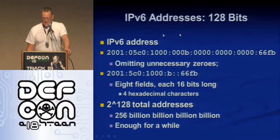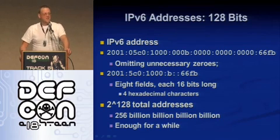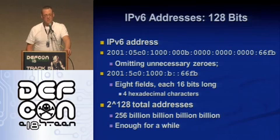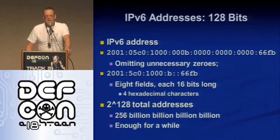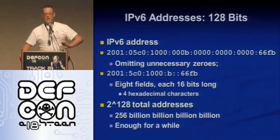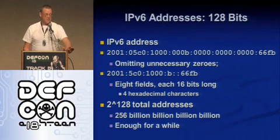IP version 6 is the answer — make the addresses really long and disgusting like this in hexadecimal. That is an IP version 6 address. Learn to love it. That is 128 bits long, and the good thing is there are enough of them — 256 billion billion billion billion. Until we colonize the entire galaxy and have every atom in our body independently addressed, we're not going to run out. We will not have to have IP version 7 in another 10 years, at least not because we ran out of addresses.